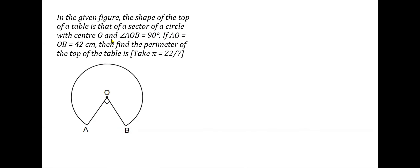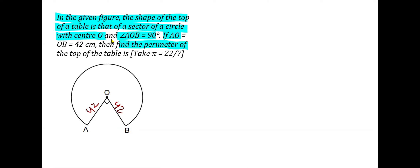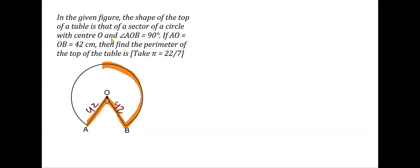The next question: the shape of the top of a table is that of a sector with center O, and angle AOB is 90 degrees. OA and OB are the radii, each equal to 42 centimeters. We have to find the perimeter of the top of the table. The perimeter is the boundary, so we need the length of OA, OB, and the arc AB. Since we want the major arc, we need the reflex angle.